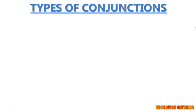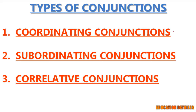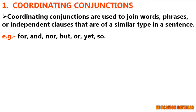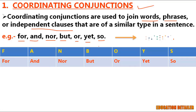Now, move on to the types of conjunctions. Mainly, there are three types: coordinating conjunctions, subordinating conjunctions, and correlative conjunctions. The first type is coordinating conjunction — this is the most common type. Coordinating conjunctions are used to join words, phrases, or independent clauses that are of a similar type in a sentence. They are limited to only seven words: for, and, nor, but, or, yet, so. You can easily remember all seven words with the acronym FANBOYS.